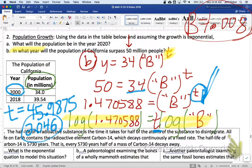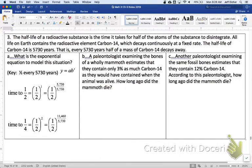So, that's one type of example. The only other type of example in this lesson is about what are called half-lives. So, let's look at another example. The half-life of a radioactive substance is the time it takes for half of the atoms of the substance to disintegrate. All life on Earth contains the radioactive element carbon-14. You might have heard of carbon-14 dating. Not like carbon-14 going on dates, but dating how old something is with the amount of carbon-14 in the substance, which decays continuously at a fixed rate. The half-life of carbon-14 is 5,730 years. That is, every 5,730 years, half of the mass of carbon-14 decays away.